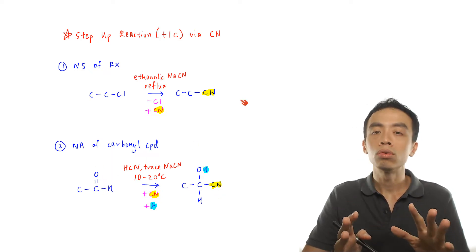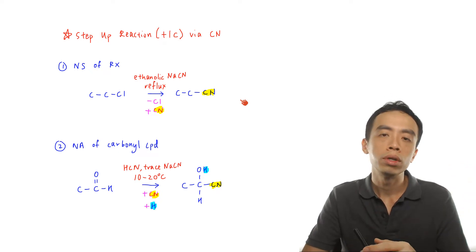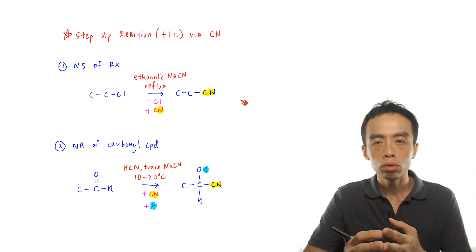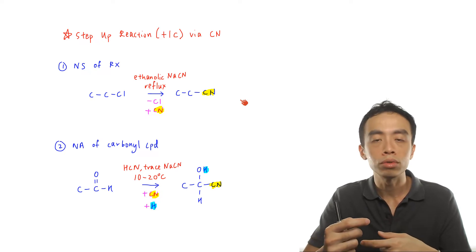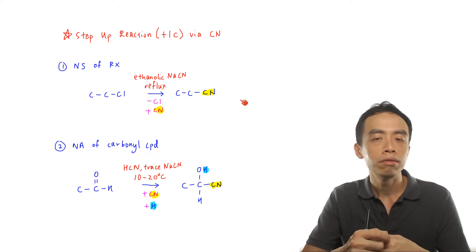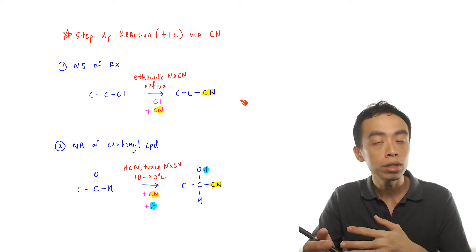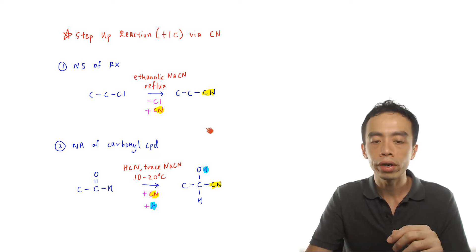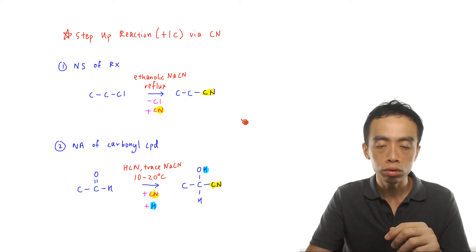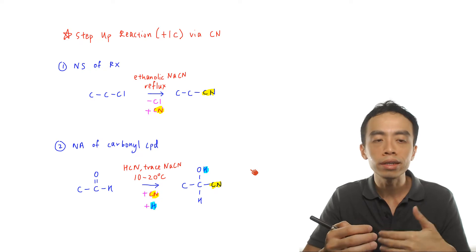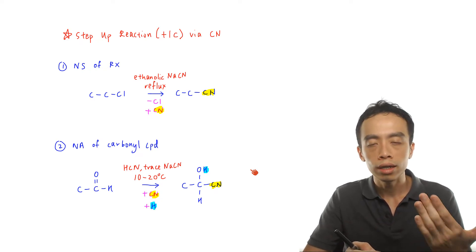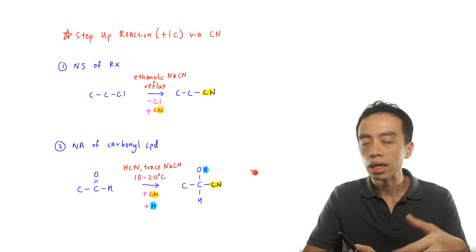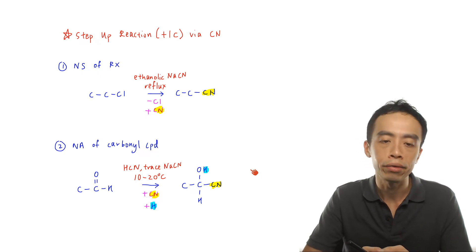So it is an addition of functional group — from one functional group to two functional groups. So what we need to do is look at the product, decide how many functional groups the product has, and reason out whether we should do this step-up reaction via substitution or addition reaction. In general, these two reactions are not interchangeable, because if we accidentally use the wrong step-up process, then we will need to waste more steps to try to rectify this error.